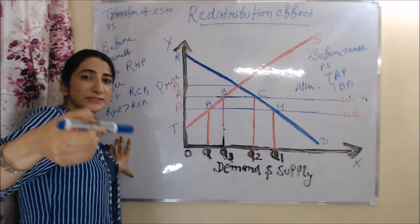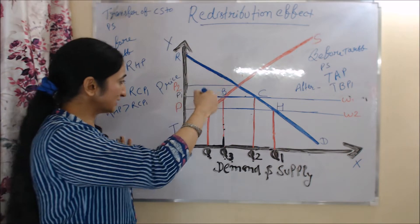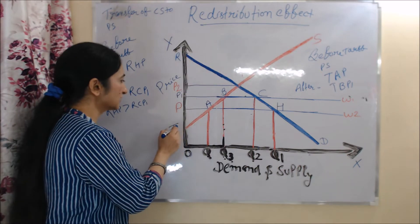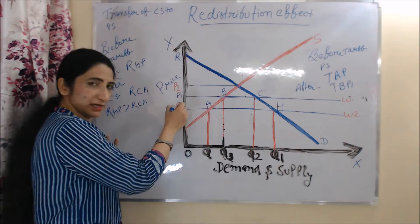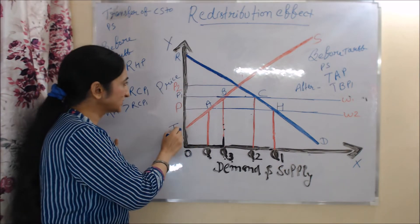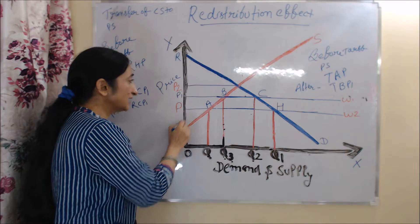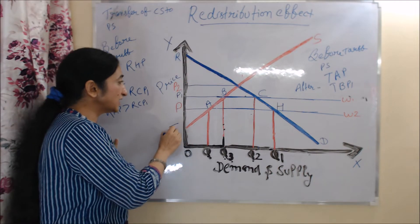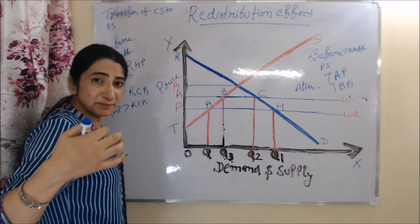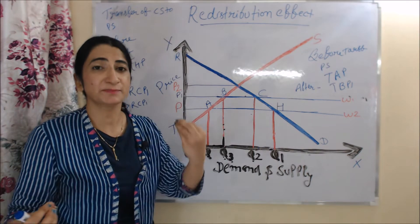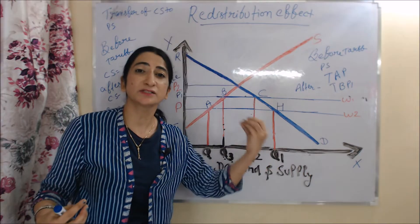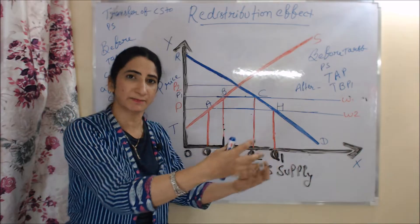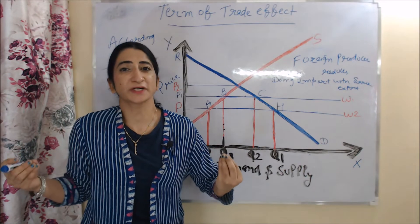On the other hand, before imposing tariff, producer surplus was TAP. But after imposing tariff, producer surplus is TBP1. TBP1 is more than TAP, so we can say that after imposing tariff, because price increases, producer surplus increases but consumer surplus falls. Therefore, consumer surplus is transferred to producer surplus.